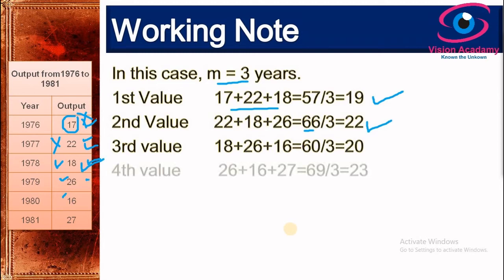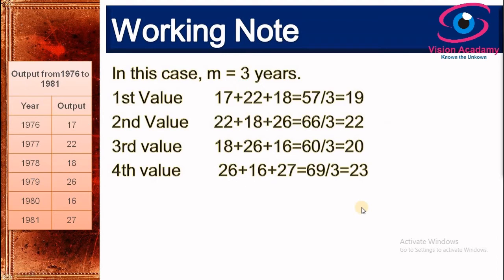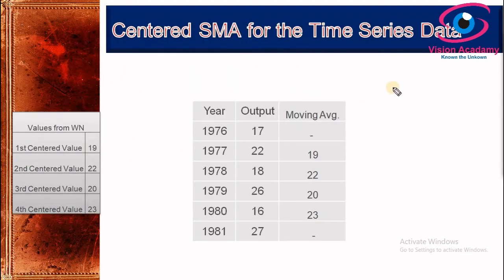For the fourth value, we discard 18 and consider 26, 16, and 27, which totals 69 divided by 3, giving a fourth value of 23. We cannot calculate a fifth value because if we discard 26 we would only have two remaining values, which is not enough for a three years moving average. So the calculation ends here with four values.